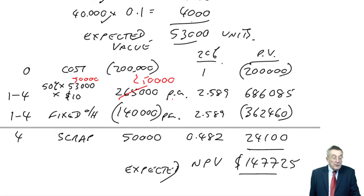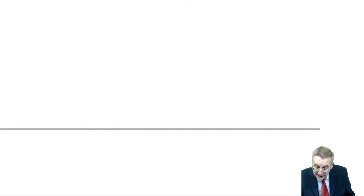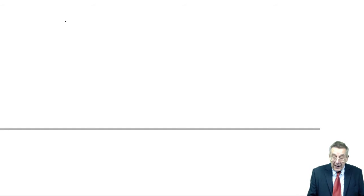But this time, the fixed overheads are uncertain. In Part A, we assumed they were fixed at 140, but it now says that in fact, there might only be 100, there might be as much as 220. And so, all we do is say, well, what are the expected fixed overheads? And use that.